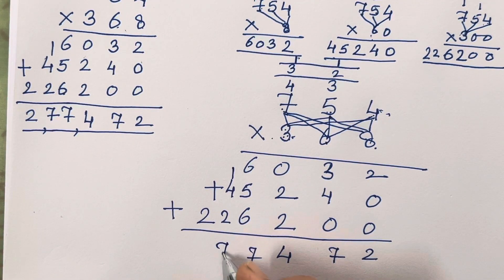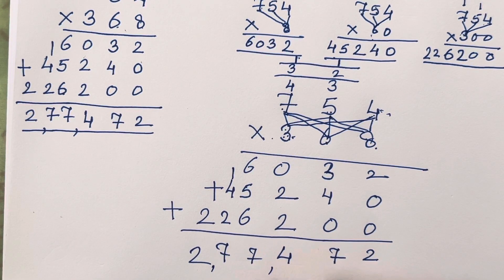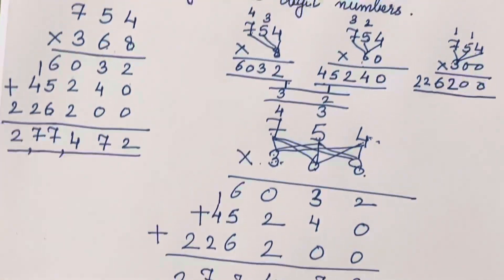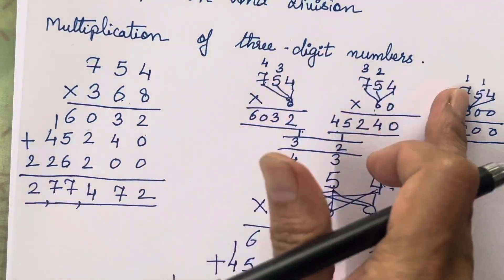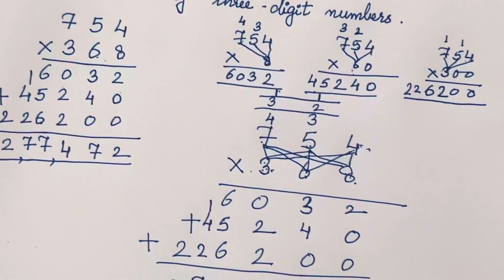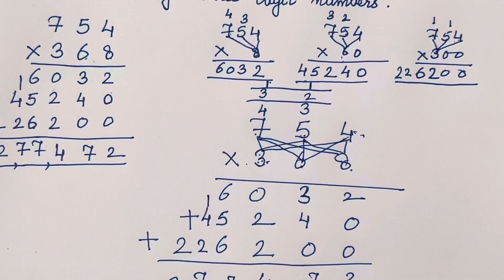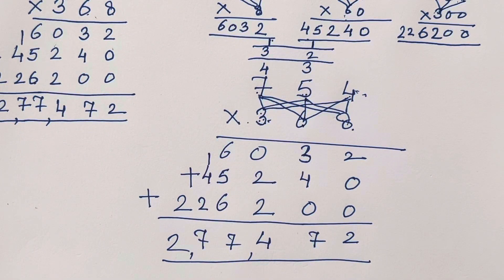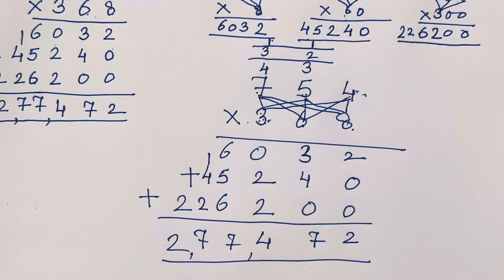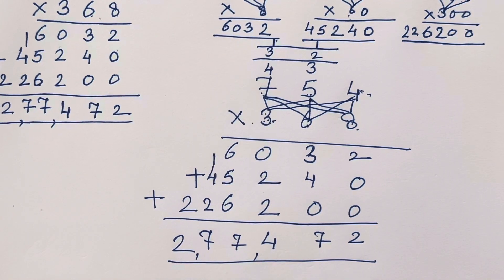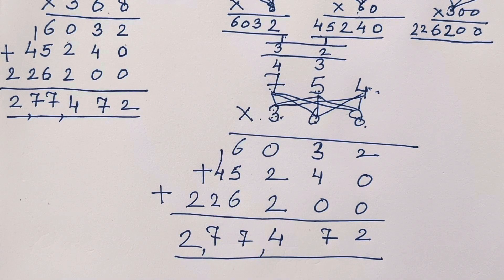The answer is also the same. This is the short form, and the one we did earlier was the long form. Whichever is easier, children, you can multiply and find your answer. If you are not able to find the answer, do let me know in the comment section so I can help you with your multiplication sums. It only needs practice and your tables should be accurate while multiplying. Don't worry — see you in the next video, take care, bye!